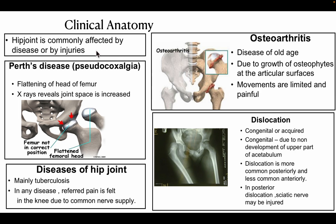Clinical anatomy: the hip joint is commonly affected by disease or injury. Pott's disease refers to flattening of the head of the femur, visible on X-ray. In any disease of the hip joint — mainly tuberculosis — referred pain is felt in the knee due to common nerve supply. Osteoarthritis is seen in old age due to growth of osteophytes at the articular surface; movements are limited and painful. Dislocation of the hip joint can be congenital — due to non-development of the upper part of the acetabulum — or acquired. Posterior dislocation is more common and the sciatic nerve can be injured.